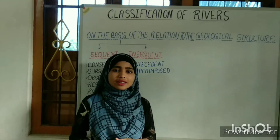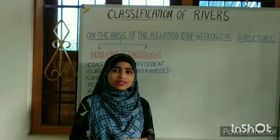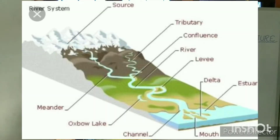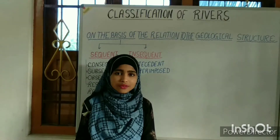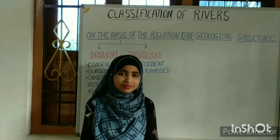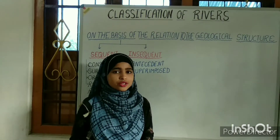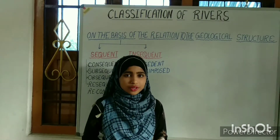So let's start by understanding what a river is. A river is a naturally flowing water course, usually fresh water, falling towards an ocean, sea, land, or another river. That is the general definition of the river.